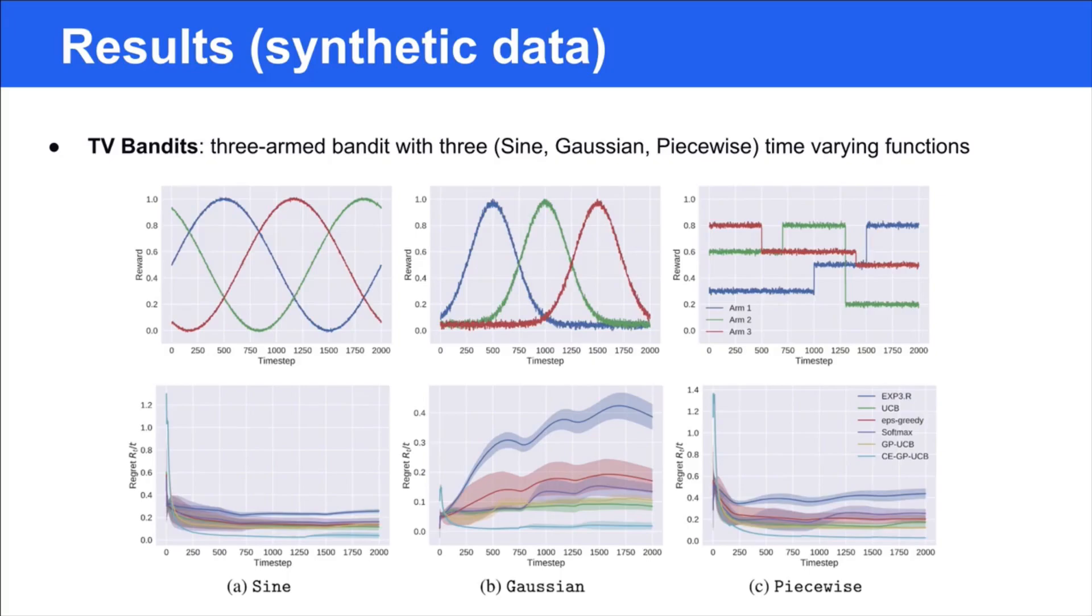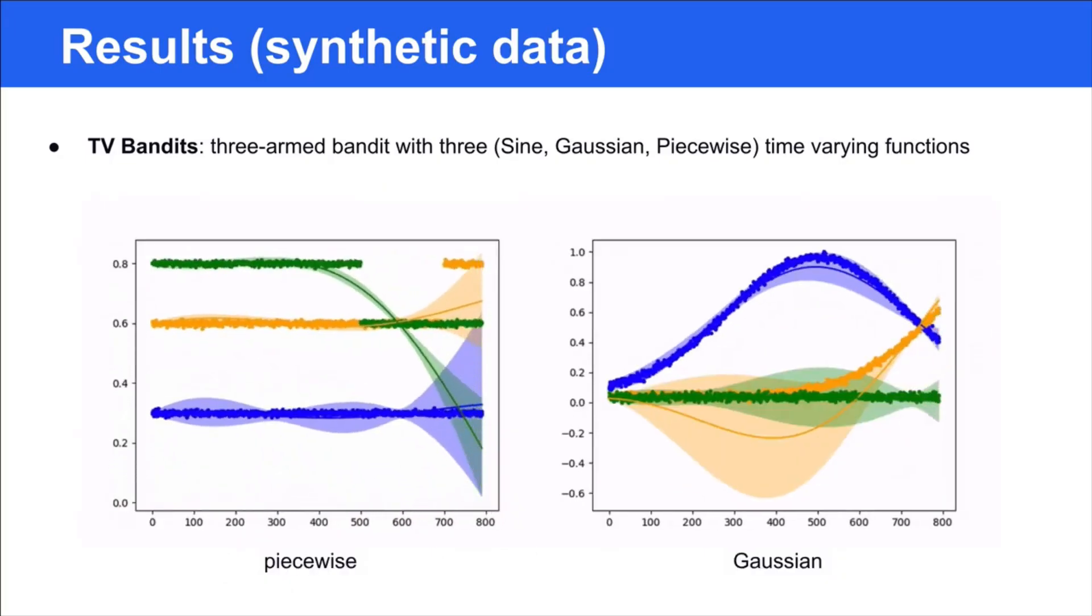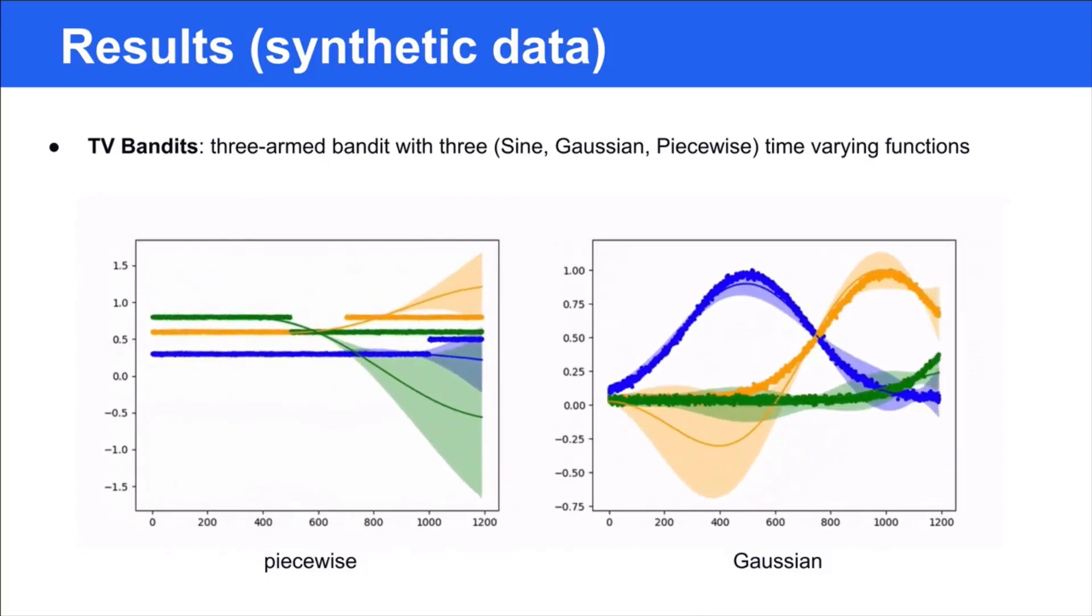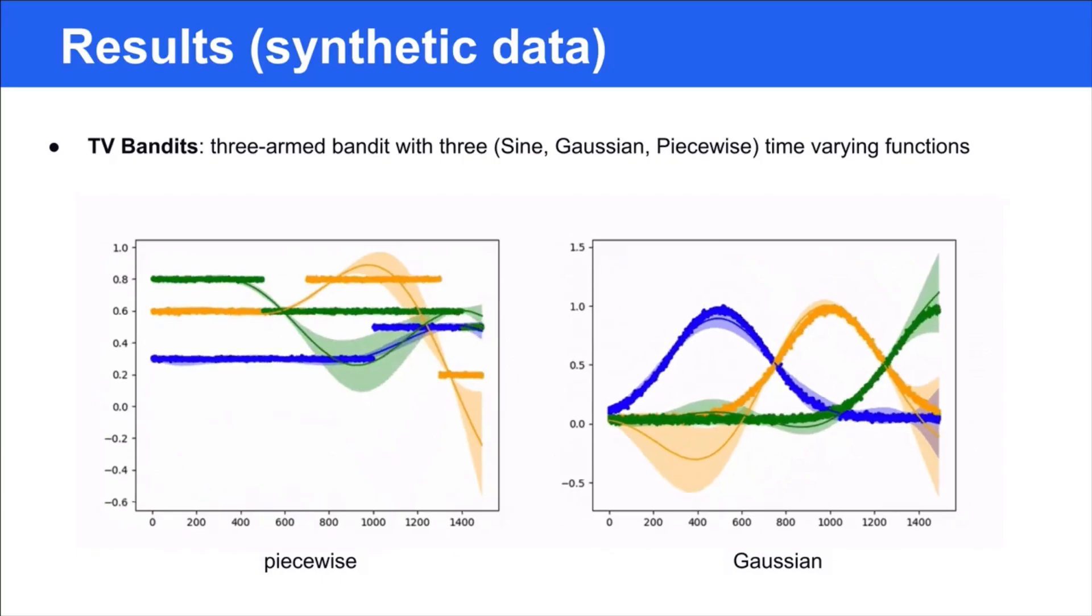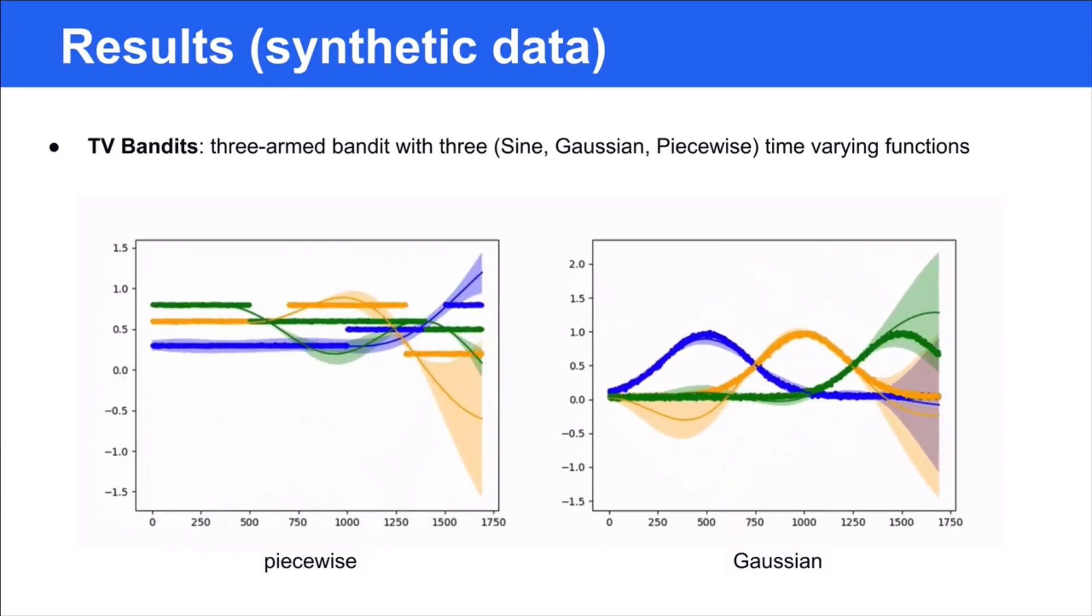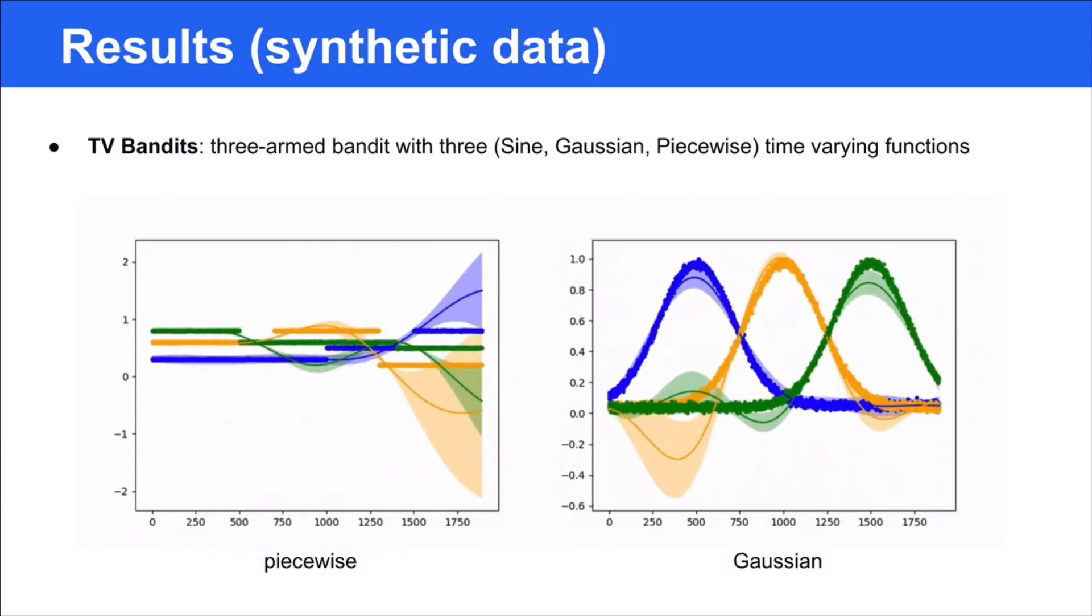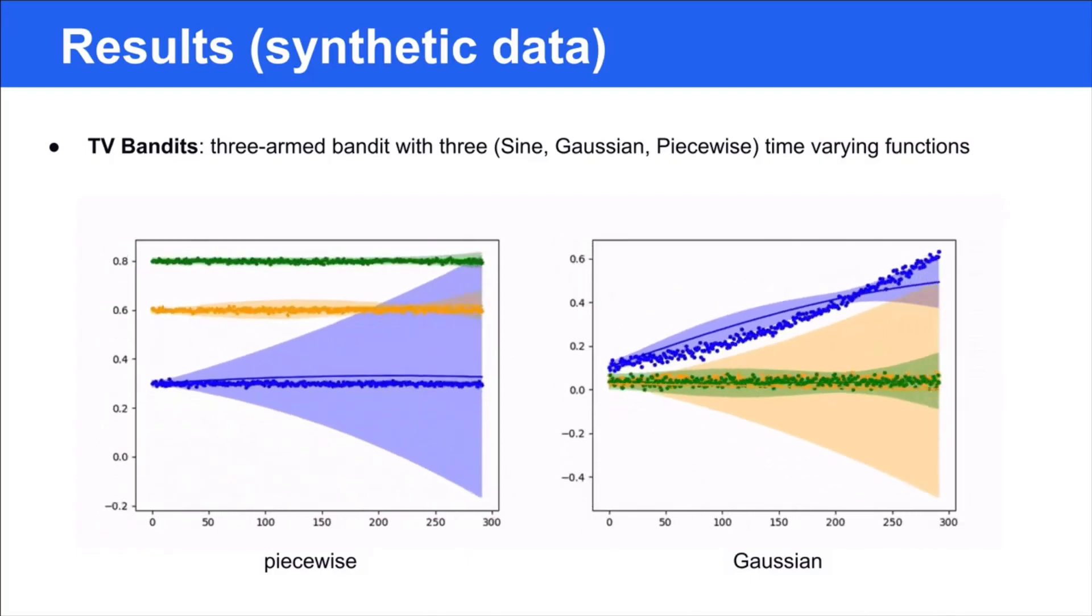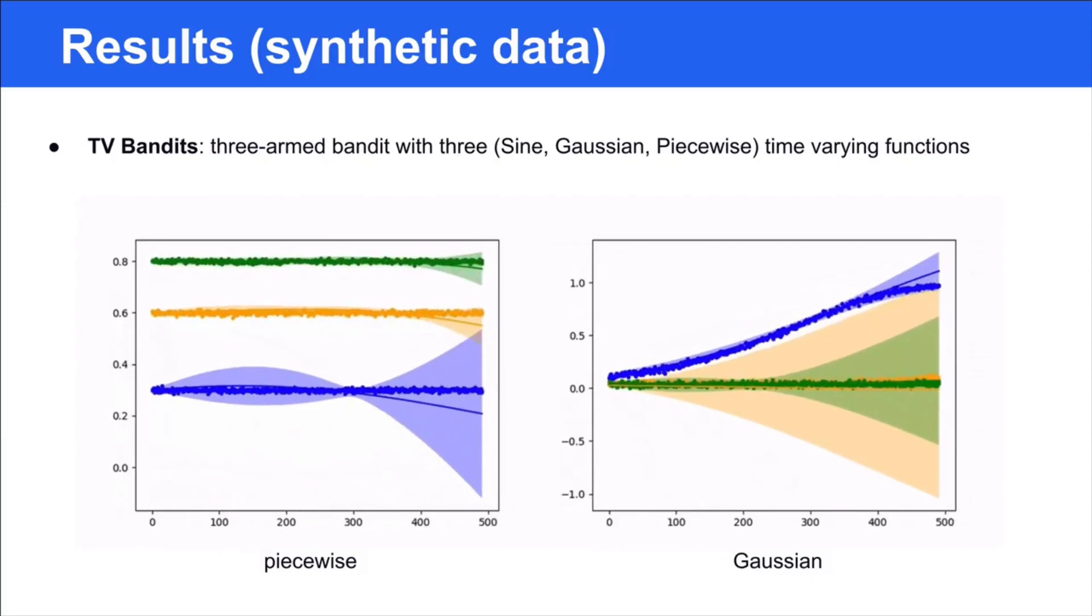Compared to the baselines, our cost-effective GP-UCB achieves similar average regret while requiring less queries consistently under the three types of time-varying functions. We further visualize how GP models evolve with time increasing. From the video, we can find that the GP model becomes less confident and has a large uncertainty when no feedback is received for a long time. But when the agent cannot distinguish the three arms, it will query the feedback and update the GP model.